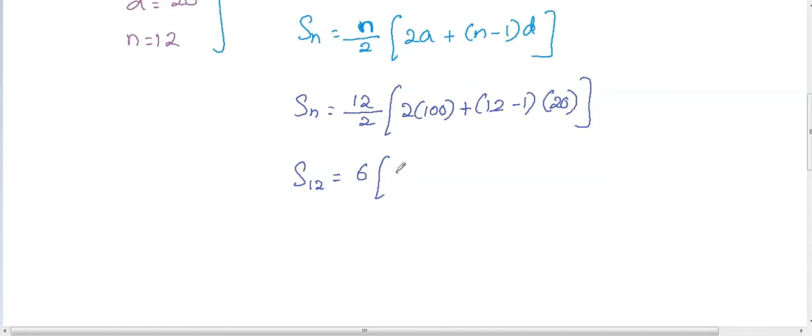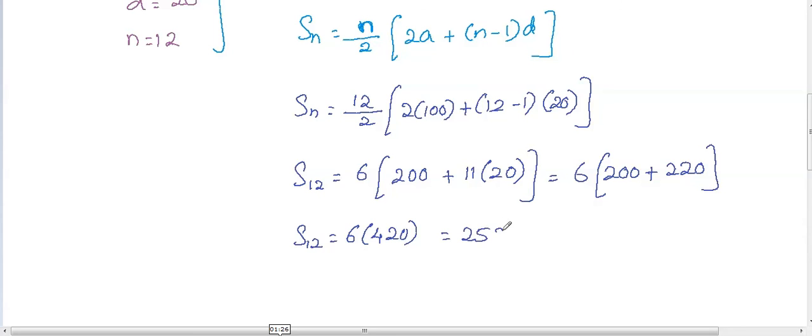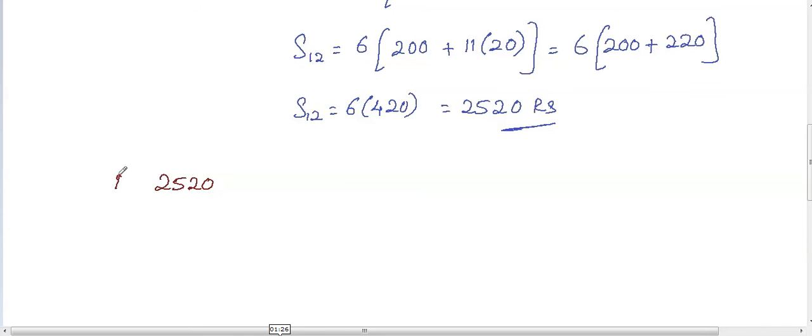If you plug all these values into the formula, we'll get the total sum of 12 weeks. S12 equals 6 × (200 + 11 × 20), which is 6 × (200 + 220), equals 6 × 420, which is 2520 rupees.